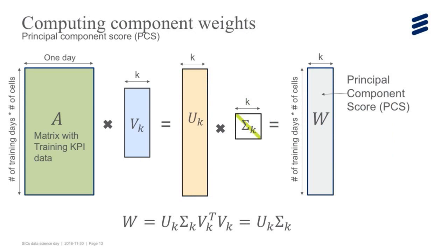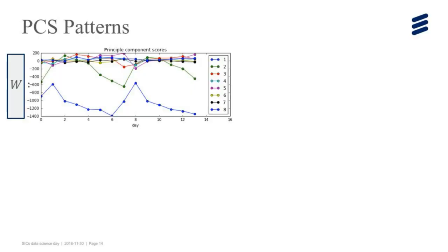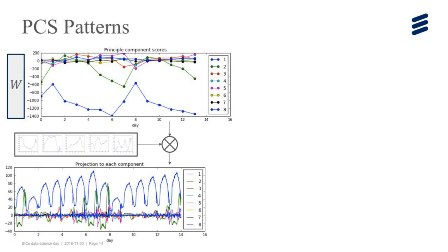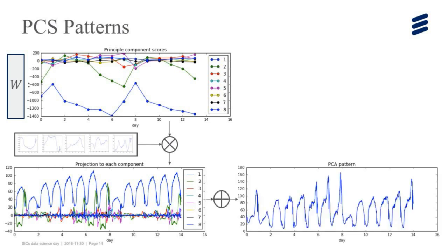But we are interested in forecasting, so we further focus on the weight for each component for the training days, which is referred to as principal component scores. By multiplying the principal components to the training matrix, we obtain this PCS matrix. Each row is length K vector corresponding to one day and one cell. This is a plot of PCS for a certain cell. The x-axis is a day, and y-axis is value. Here we maintain eight principal components, so K equals eight. For each component, the PCS gives one weight for each day. It looks like having seasonality. We multiply each component, then we obtain the time series pattern corresponding to each component. Summing them together becomes a trained pattern for training days.